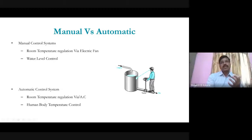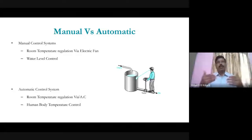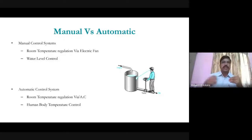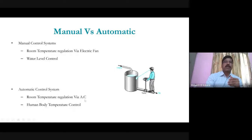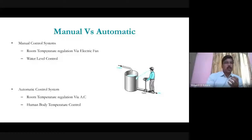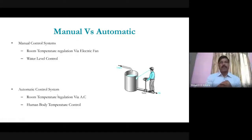A water level controller where a person changes the valve position is also a manual control system. In an automatic control system, there is no intervention of a human being — once you set things, they are controlled automatically. For example, setting an AC to 23 degrees Celsius means it will automatically maintain that temperature, with no need to manually adjust it.